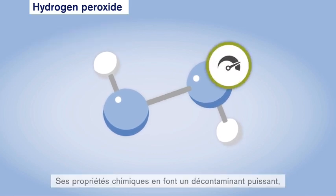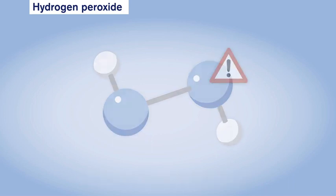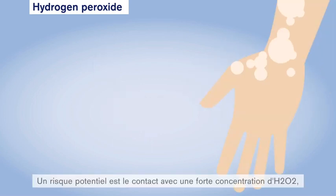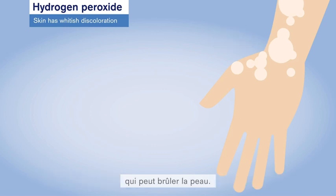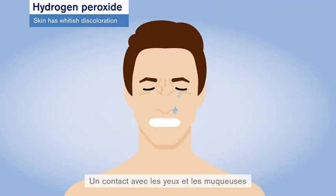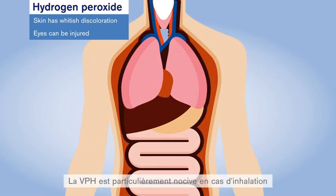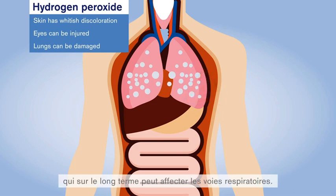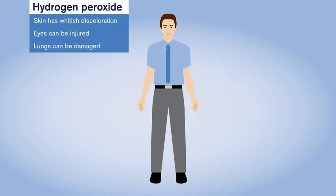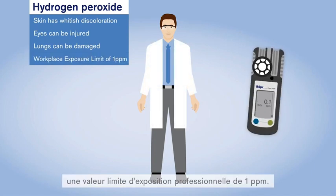H2O2's chemical properties make it a powerful decontaminant, but also carry risks. One potential risk is that contact with increased concentration levels of H2O2 can lead to skin burns. Contact with eyes and mucous membranes can even lead to permanent tissue damage. And hydrogen peroxide is particularly harmful when inhaled as a vapour and leads to long-term damage to the respiratory organs. That's why many countries impose a strict occupational exposure limit of 1 ppm.